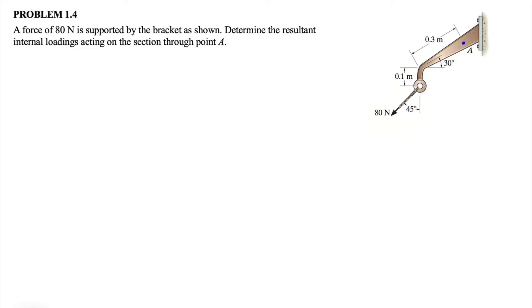As always, what we need to do is section this bracket at point A in order to figure out all the reactions that we have at that point. Before that, let's just call our X and Y in this direction. So this will be our X and this will be our Y.